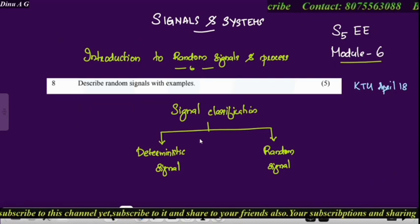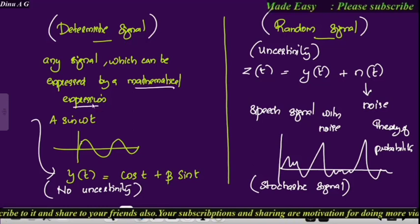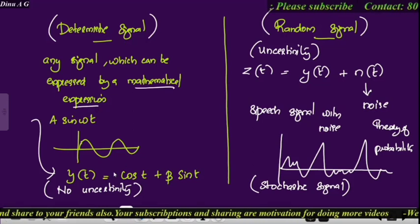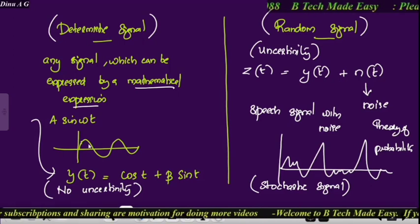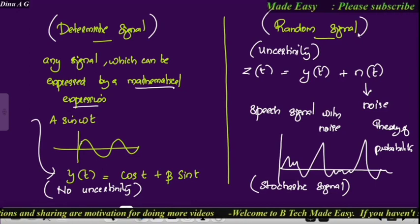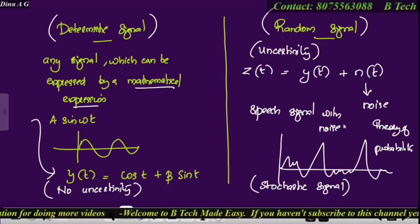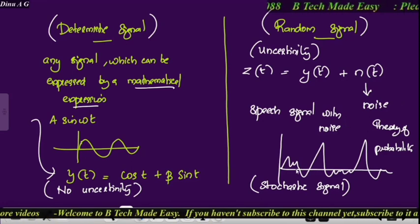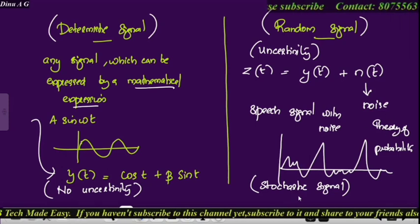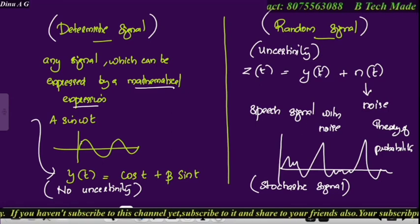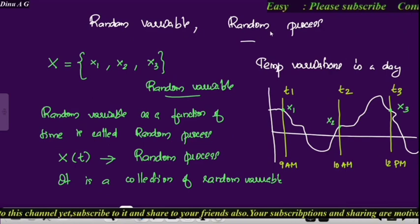To summarize: signals are classified as deterministic signals and random signals. Deterministic signals are expressed by a mathematical expression with no uncertainties — the amplitude and parameters can be found at any instance. Random signals have uncertainty; a speech signal with noise is an example. At any time instance the value is not predictable. Analysis uses the theory of probability and the stochastic process. Random signals are also called stochastic signals.